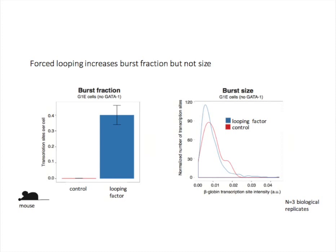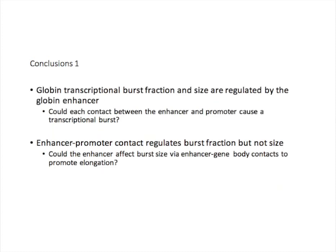These findings have several implications. First, they show that burst fraction and burst size can be controlled independently. Second, they suggest that enhancer-promoter contact frequency governs how often the promoter fires. Perhaps each time the enhancer contacts the promoter, the promoter undergoes a transcriptional burst. This model would suggest that enhancer-promoter contacts are quite dynamic. How, then, does the enhancer influence burst size? Perhaps enhancer gene body contacts promote transcriptional elongation, which could produce the increase in globin burst size that we see when we differentiate red blood cells.